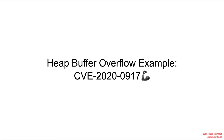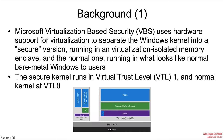Let's look at an example having to do with virtual machine security. Microsoft has a technology called virtualization-based security, and it uses the hardware support for virtualization that exists on all modern systems in order to provide a separated or isolated area of memory in which they can run what they call the secure kernel.